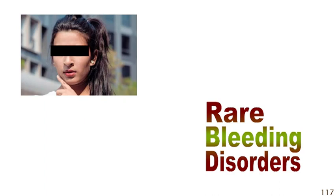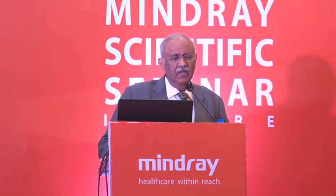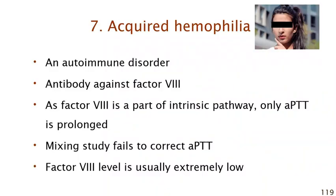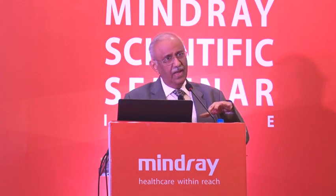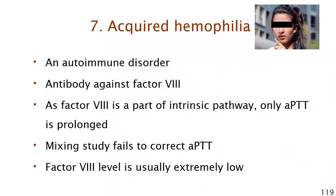Moving to rare acquired bleeding disorders — specifically acquired hemophilia. Acquired hemophilia is an autoimmune disease, with the commonest form being antibody against factor VIII. Factor VIII is in the intrinsic pathway, so what is prolonged is the PTT. Because this is antibody-mediated, a mixing study where patient plasma and control plasma are mixed will not correct the APTT — that antibody destroys even the control's factor VIII. If PTT corrects on mixing, it is a deficiency; if it does not correct, there is an inhibitor — an antibody.